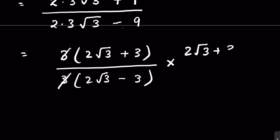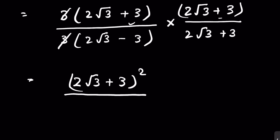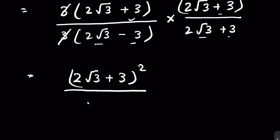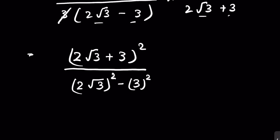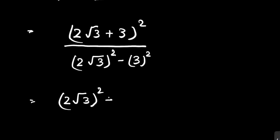Multiplying by (2√3 + 3)/(2√3 + 3): the numerator becomes (2√3 + 3)², and the denominator is in the form (a − b)(a + b) = a² − b², giving (2√3)² − 3² = 12 − 9 = 3. The numerator expands as (a + b)² = a² + 2ab + b².